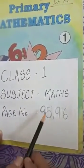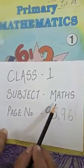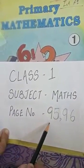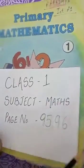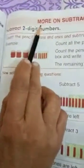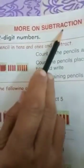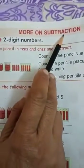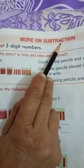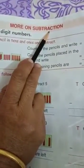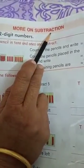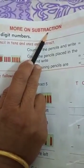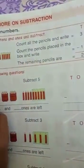Good morning students. Take out your math book, pages 95-96. We are doing more on subtraction. We have done subtraction in second term, and now we will do some more questions on subtraction.